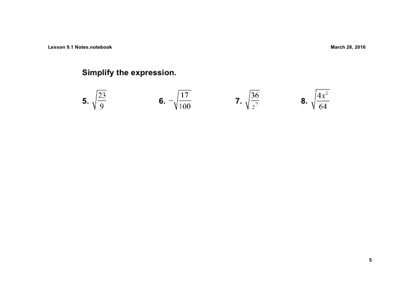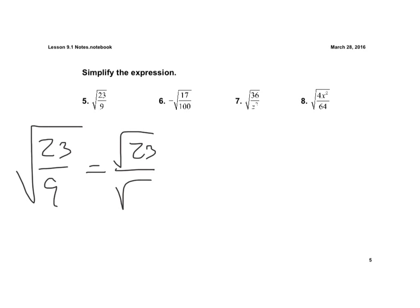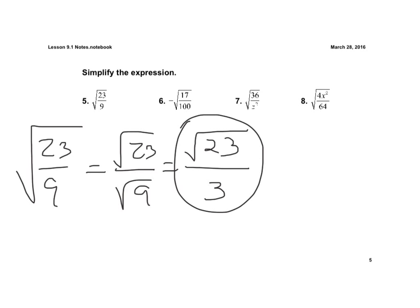The first example we're going to look at is the square root of 23 over 9. I'm going to rewrite it as the square root of 23 all over the square root of 9. The square root of 23 cannot be simplified any further, but the square root of 9 is the whole number 3. And that's our final answer.